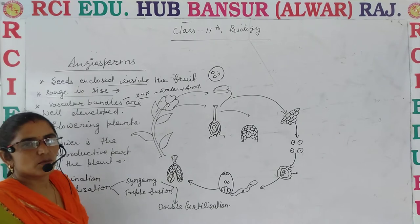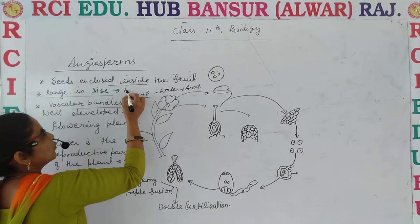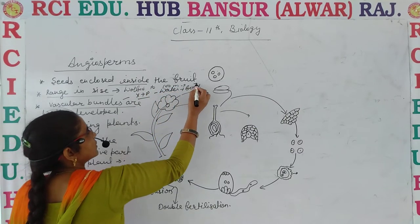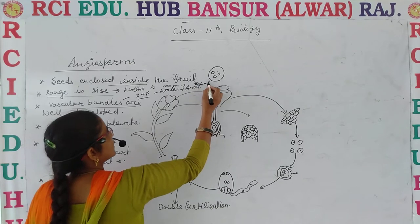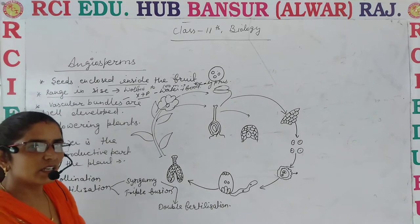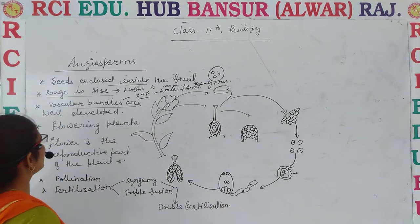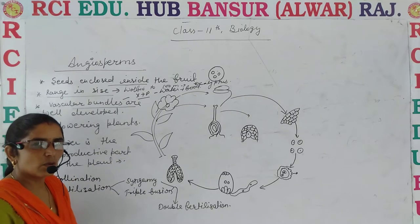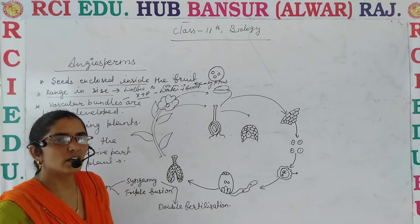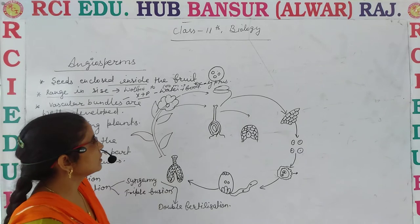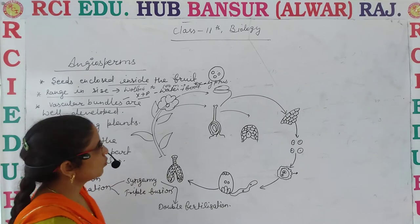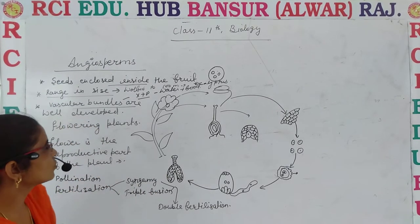These angiosperms are variable in size — from the microscopic Wolffia to the 100-meter height plant, Eucalyptus. As well as, these are flowering plants and the flower is the main reproductive part of the plant. They can reproduce through sexual reproduction, and a flower can produce both — it has both male and female sex organs. So let's discuss which are the male and female sex organs.